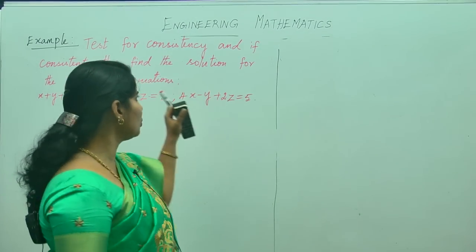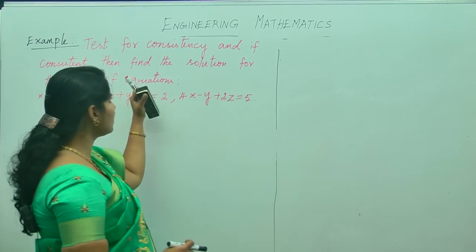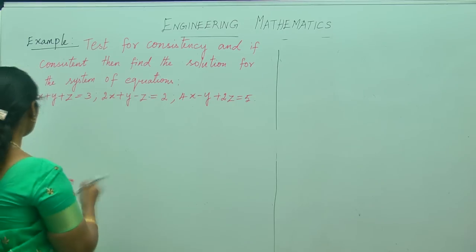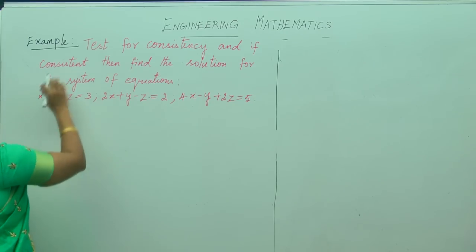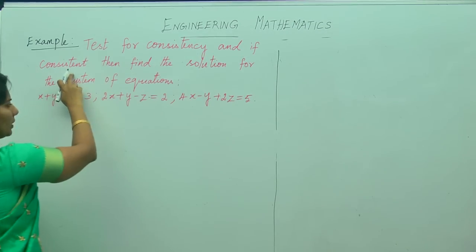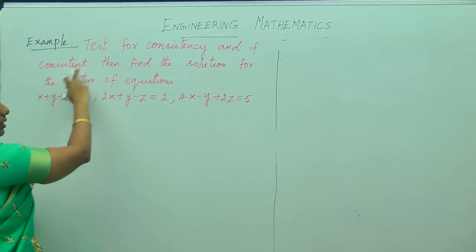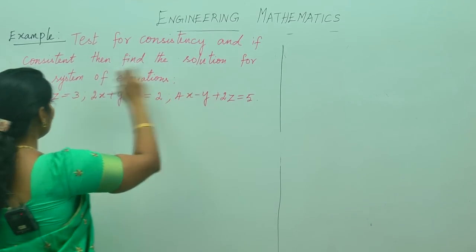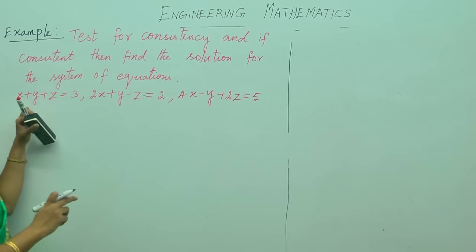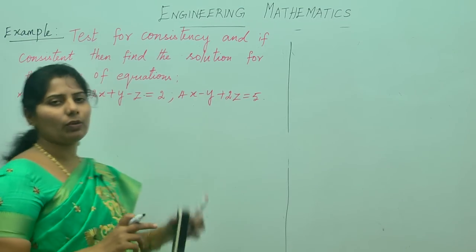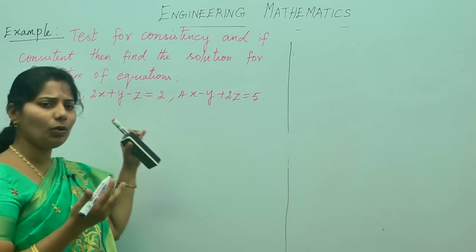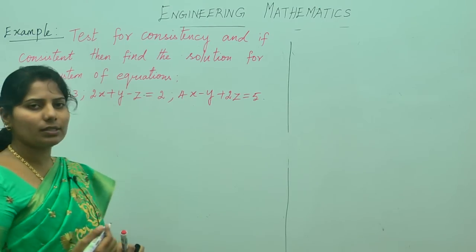I am going to show you the system of equations example. What is given here? Test for consistency and if it is consistent, then find the solution for the system of equations. They will give you 3 or 4 system of equations — they can give you any number of simultaneous equations.